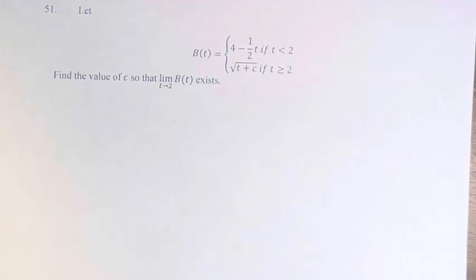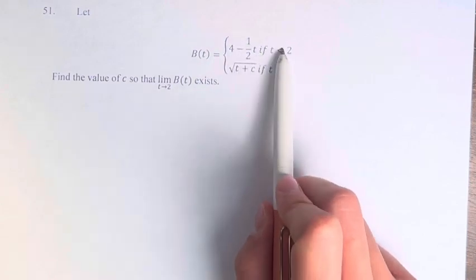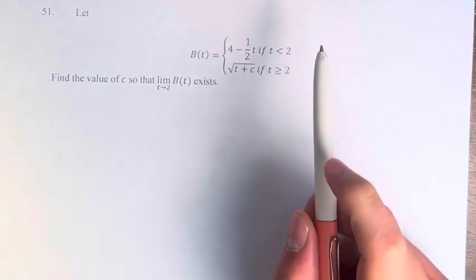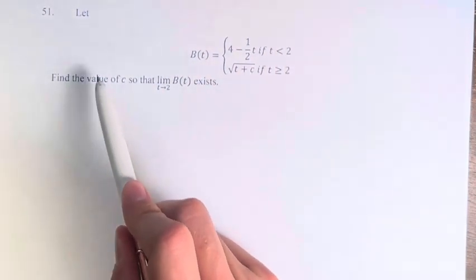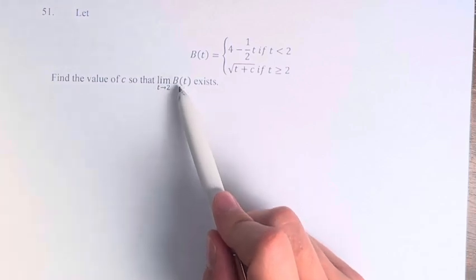Hello and welcome back to another video. In this problem, we're told to let B(t) equal 4 minus 1/2 t if t is less than 2, and the square root of t plus c if t is greater than or equal to 2. And we're asked to find the value of c such that the limit as t approaches 2 of B(t) exists.